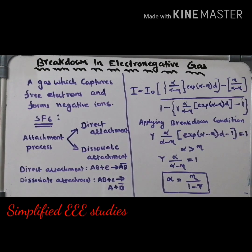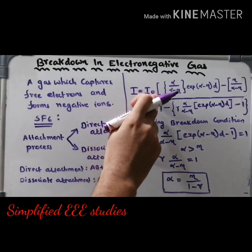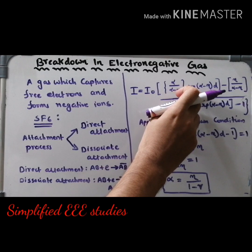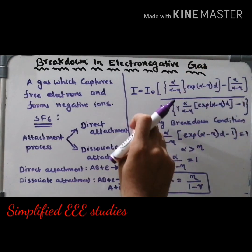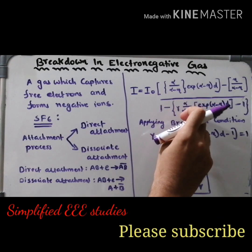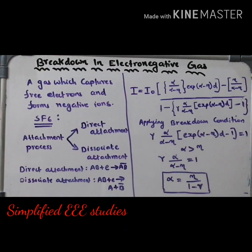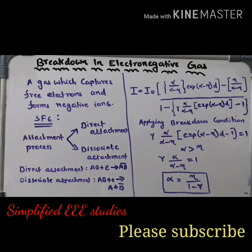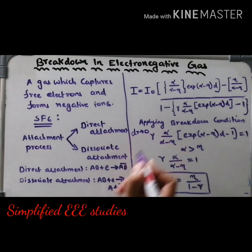Now let us have a mathematical expression for dielectric breakdown of electronegative gas. This is one of the modified equations of Townsend's theory. I is given by: I₀ multiplied by α divided by (α − η), into exponential (α − η)d, minus η divided by (α − η), all divided by 1 minus γ into (α/(α − η)) into exponential (α − η)d minus 1. This is the modification of Townsend's theory for electronegative gas. Now apply the breakdown condition — equate the denominator part equal to zero.